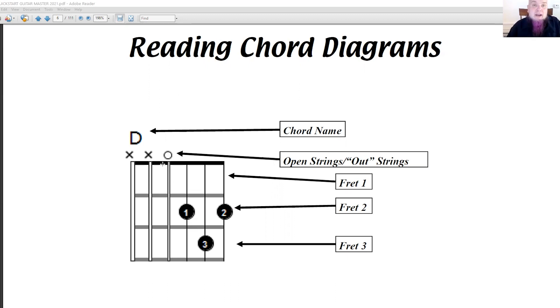And then lastly, you have the two X's there. Typically X's mean that you don't want to strum those. Sometimes we have X's and we have to mute them out with other fingers, but in the case of the D chord, the D chord is a four string chord.